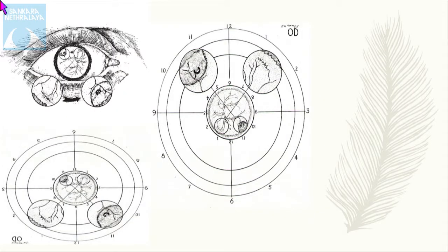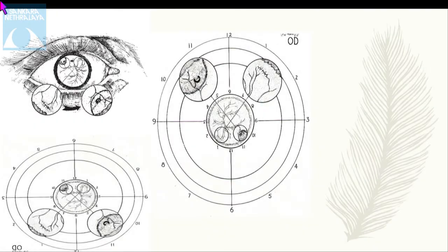To avoid confusion while drawing, we can ask the patient to look straight up. On the drawing sheet, there are clock hour markings from 1 to 12. You can put the 12 o'clock position toward the feet side and the 6 o'clock position toward the head side, then draw whatever you are seeing. This will prevent laterality issues.